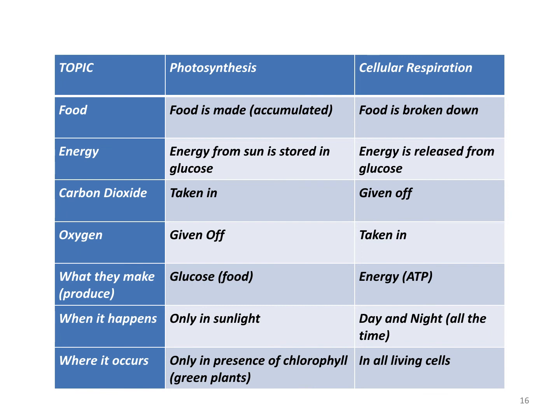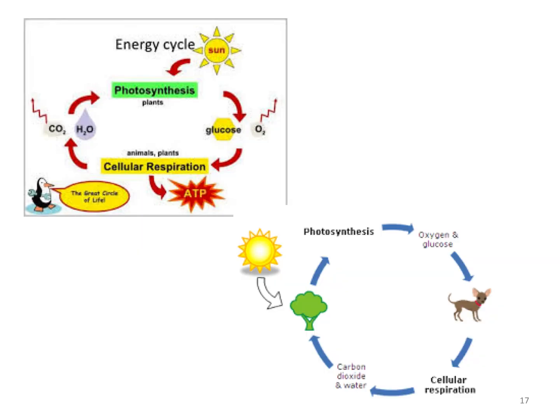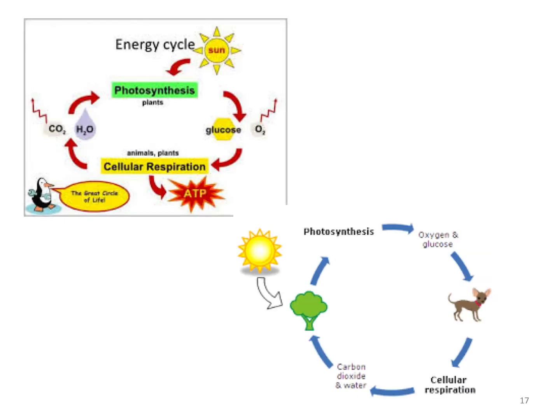Photosynthesis only occurs in green plants or in the presence of chlorophyll, and respiration happens in all living cells. If you search the internet you'll find process pictures like the ones I just showed you — they link up how these two processes work together and coincide side by side. So that's photosynthesis and cellular respiration — they are the much bigger deal in this standard, but there is this add-on at the end of the standard with transpiration.